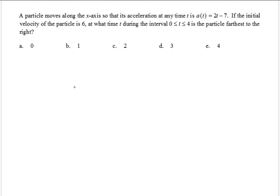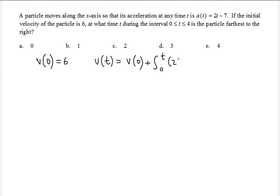The first thing you want to do is find your velocity function, because you're given acceleration and you know that the initial velocity at time zero is given as 6. You know that the velocity function can be found by adding the initial velocity to the integral from zero to t of the acceleration.